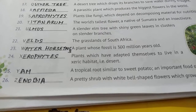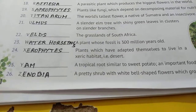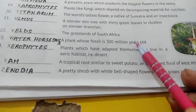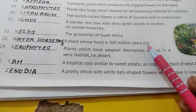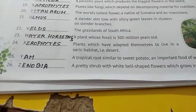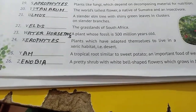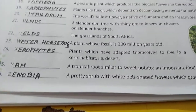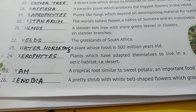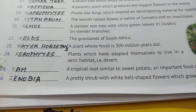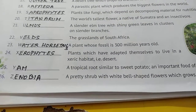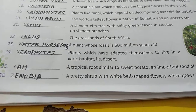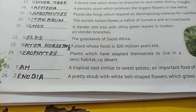Number twenty-three: a plant whose fossil is three hundred million years old — is plant ka jo fossil hai wo three hundred million years purana hai. The plant's name is water horsetail.